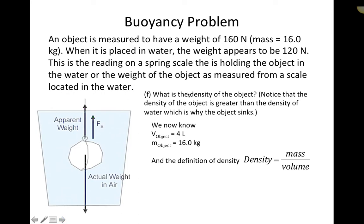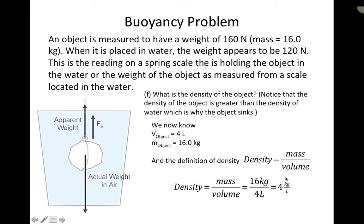Finally, the last part asks for the actual density of the object. We know the volume of the object is 4 liters, and from the beginning of the problem, the mass of the object weighed in air is 16 kilograms. Using density equals mass over volume: 16 kilograms divided by 4 liters gives a density of 4 kilograms per liter. This makes sense — the object's density is greater than that of water (1 kg/L), which is why it sinks. A less dense object would float.